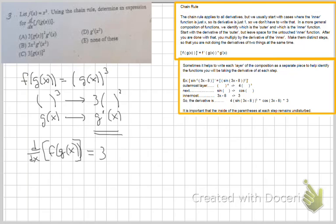it's just going to be 3. Now inside the parentheses here, we had g(x) before, so it'll still carry over. And then we multiply by g'(x). This is answer choice A.